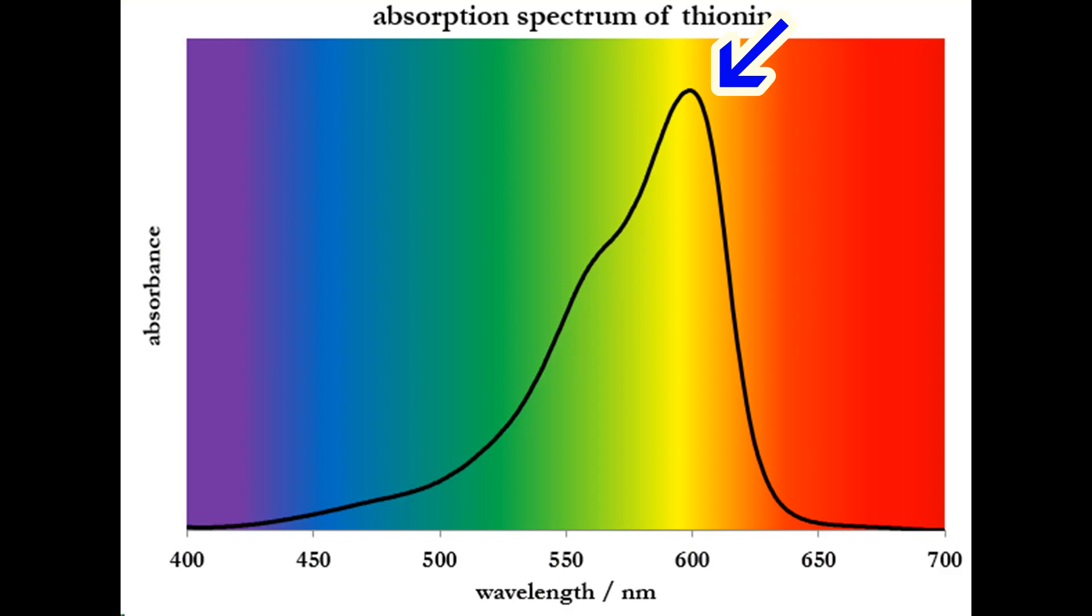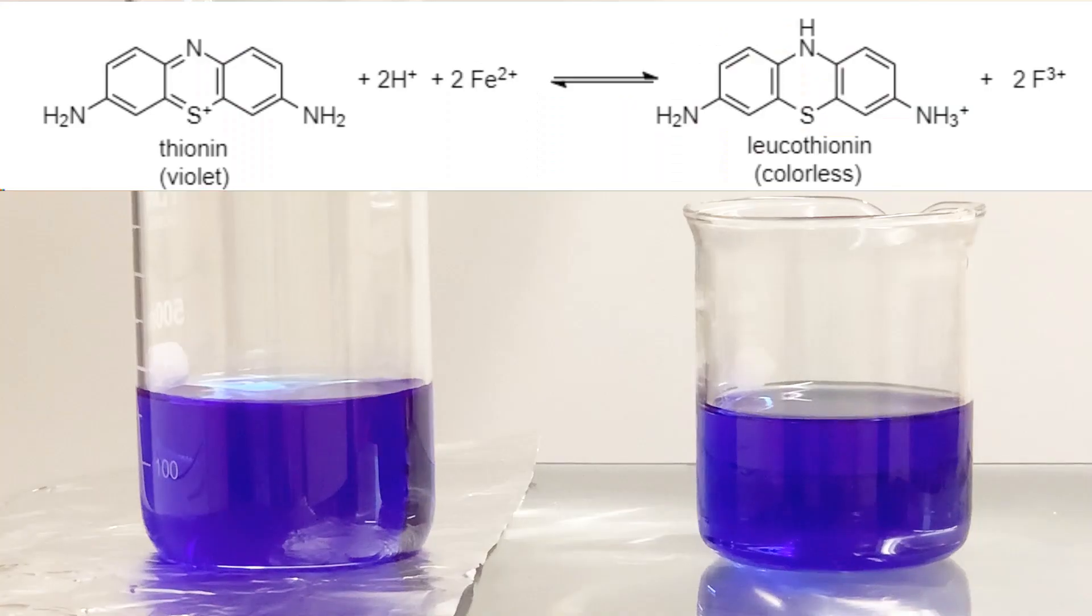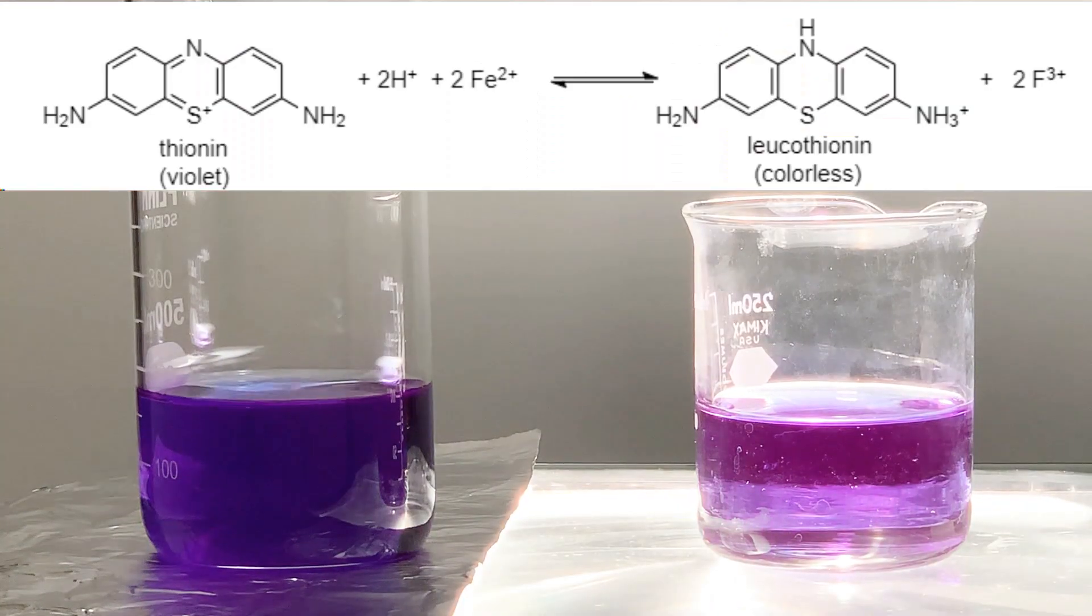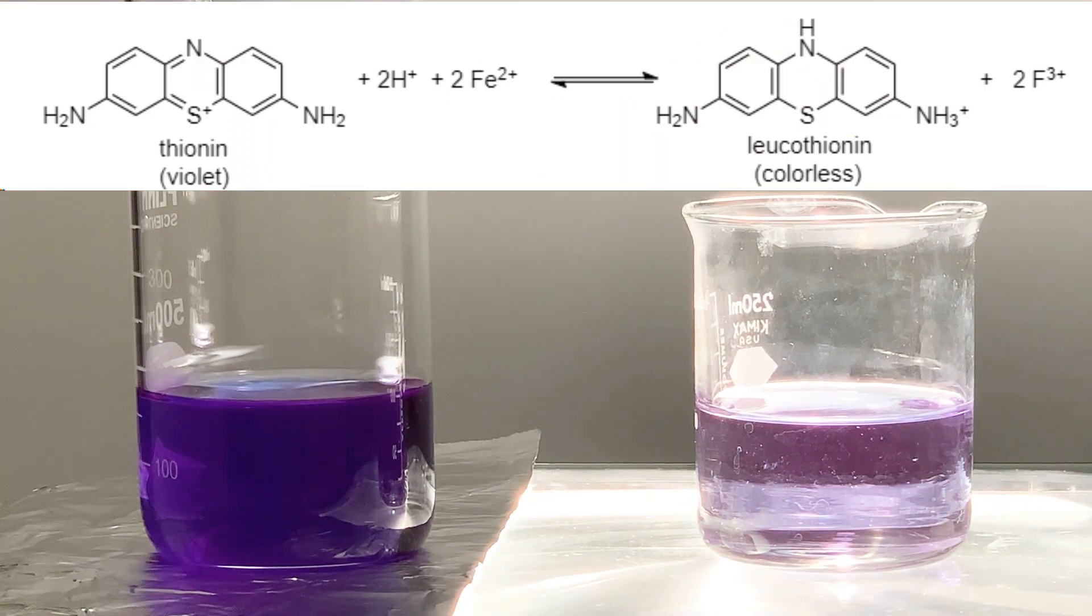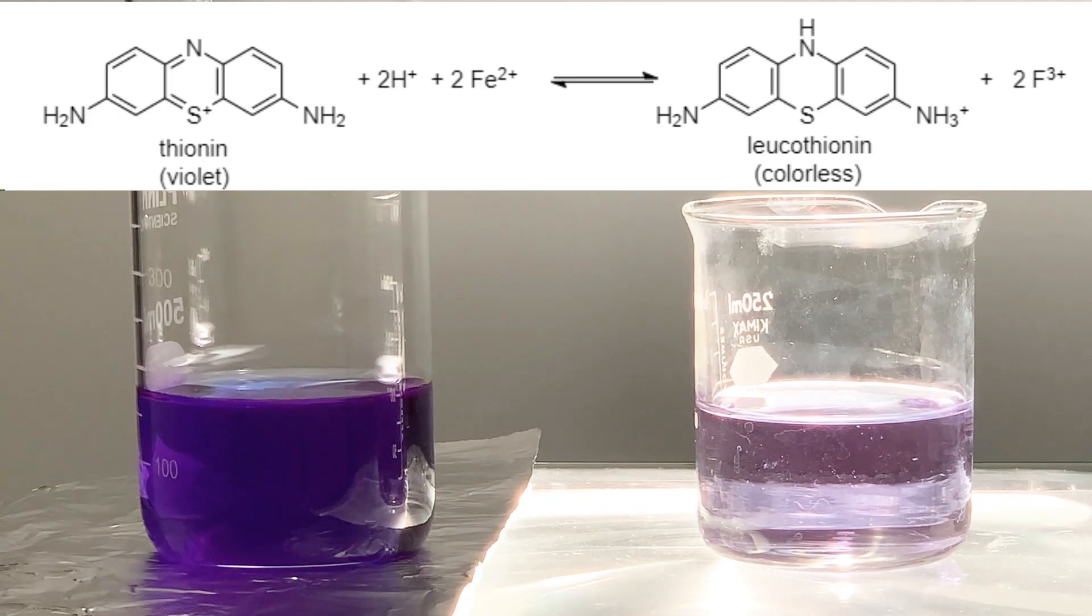This tells us that thionine absorbs yellow light quite well. So in this chemical reaction, it's very likely the case that thionine dye's absorbing yellow light to gain the energy it needs to react with the iron ions to form the colorless leukothionine.